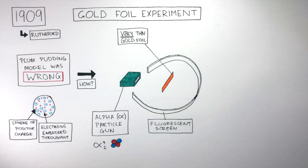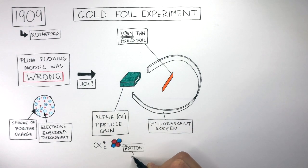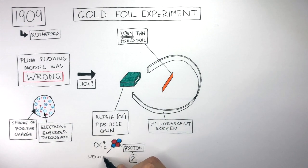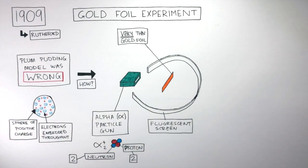The red circle represents protons, and there are 2 protons because the atomic number is 2. The blue circle represents neutrons, and there are 2 neutrons because the mass number is 4 and the atomic number is 2, so 4 take away 2 equals 2 neutrons.